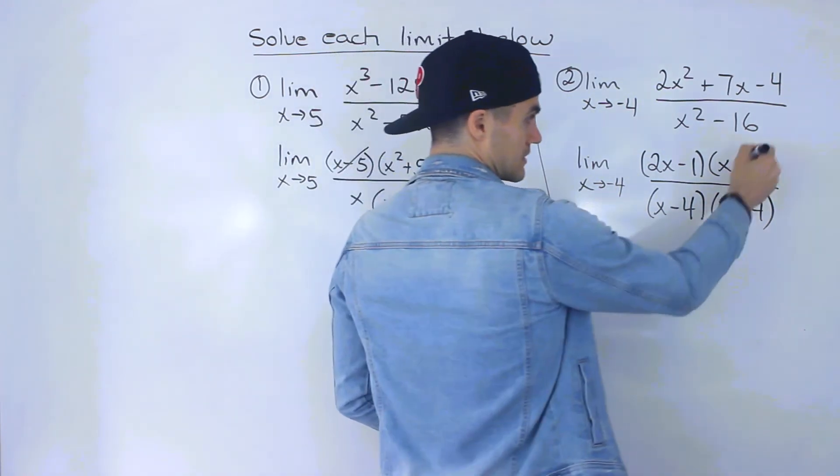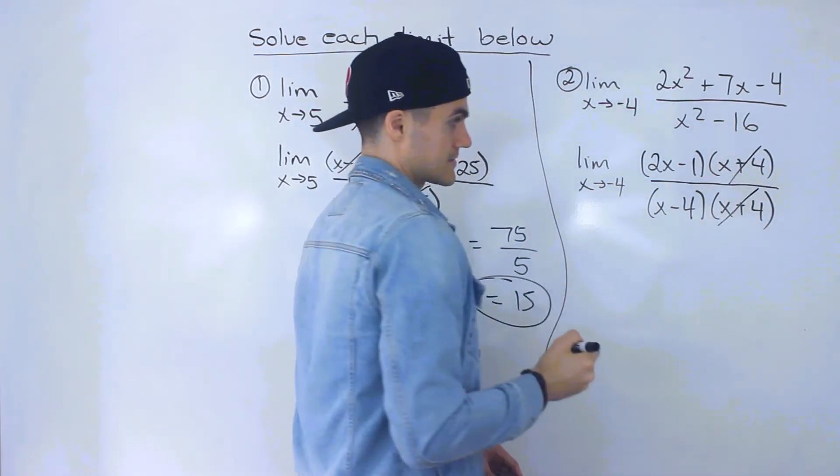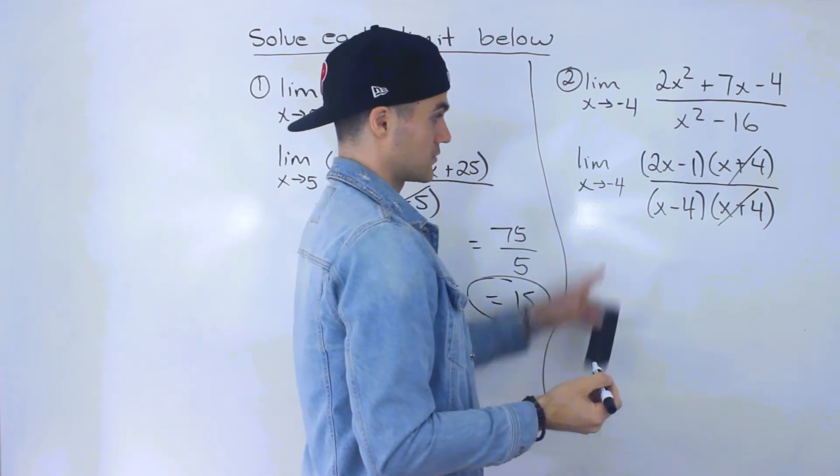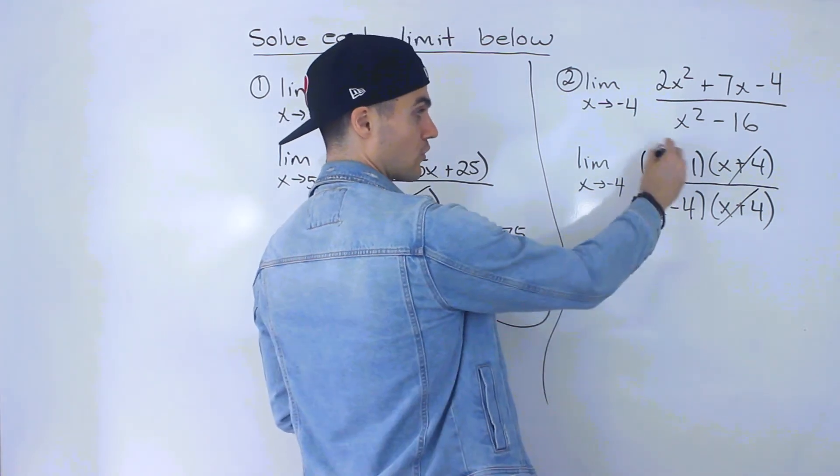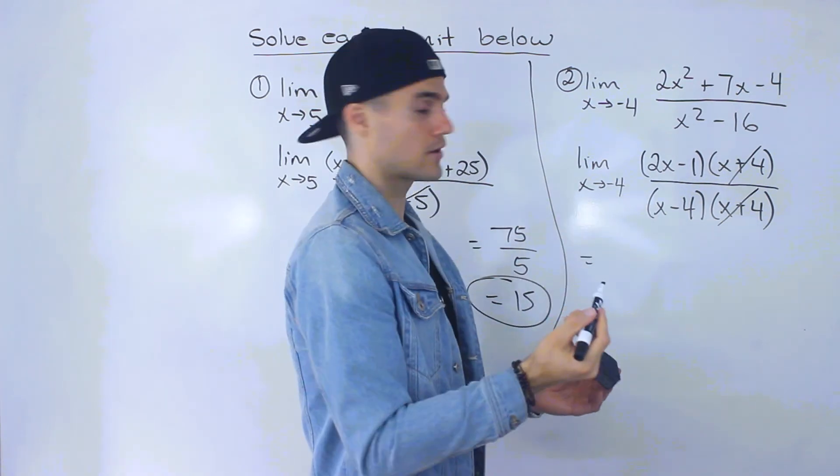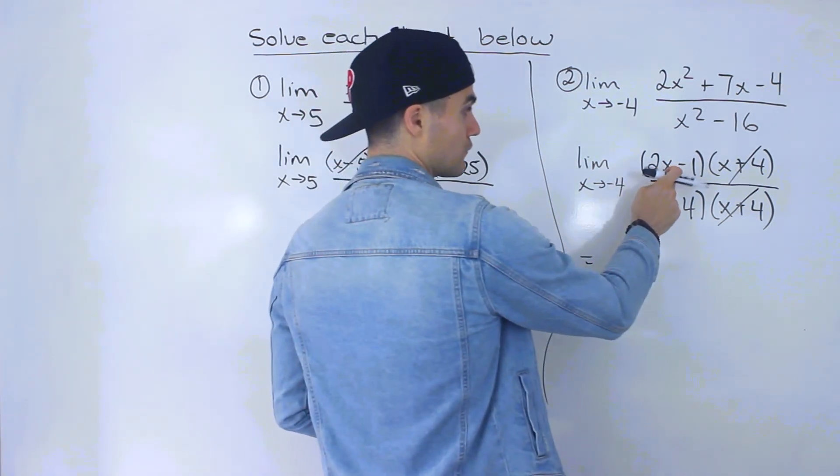So now notice the x plus 4s cancel out. And now we can make a direct substitution. We could sub in negative 4 for the x values without the denominator equaling 0. So if we sub in negative 4 up top,